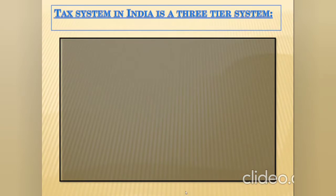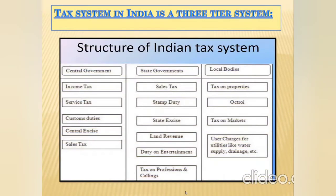Next, the tax system in India is a three-tier system, that is central government, state government, and local bodies. The tax levied by the central government will be on income tax, service tax, customs duties, central excise, and sales tax. The tax levied by state governments will be on sales tax, stamp duty, state excise, land revenue, duty on entertainment, tax on professions and callings.